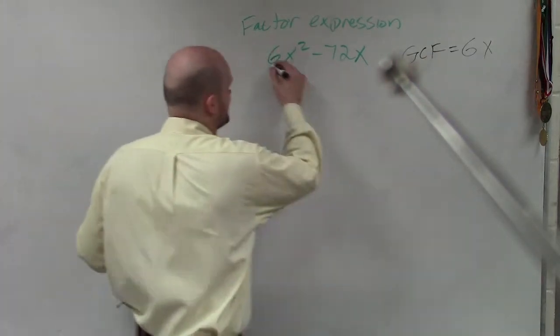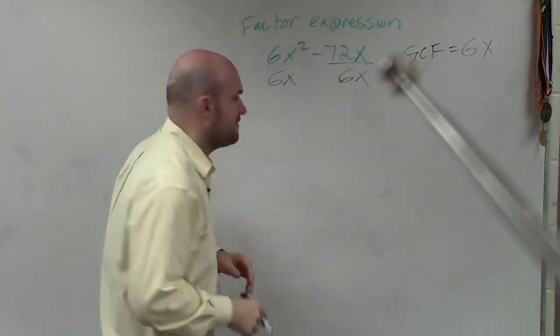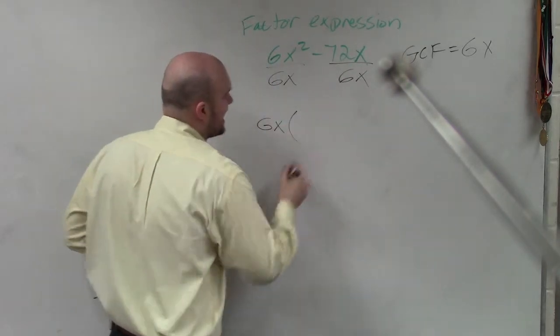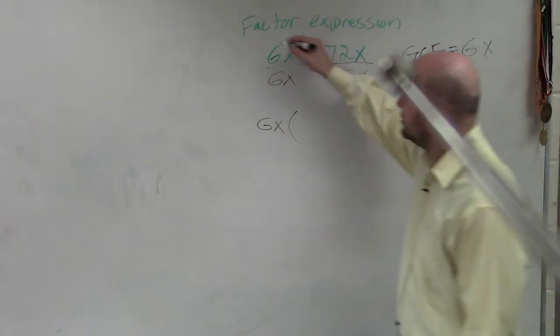So now, basically, what I'm going to do is divide each of these by our GCF. Then I have 6x times what is the quotient when I divide both by 6x? x minus 1.